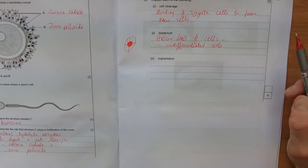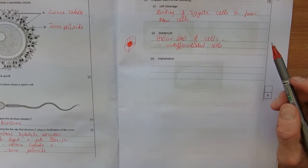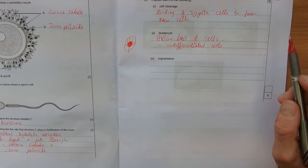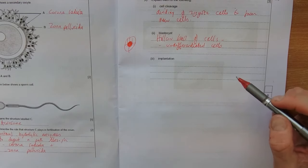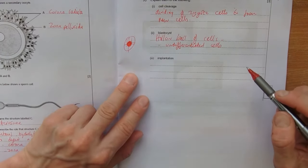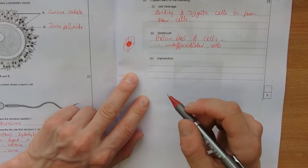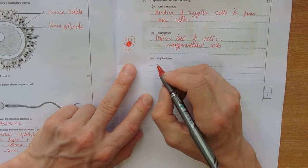And then on with our definitions, implantation. Well, we need to say what's going to get implanted into what. So if you implant something, it needs to be what's implanted and what you implanted it in. So embedding.